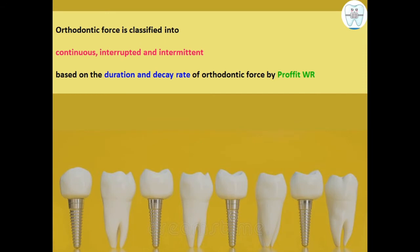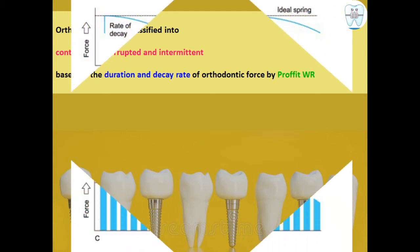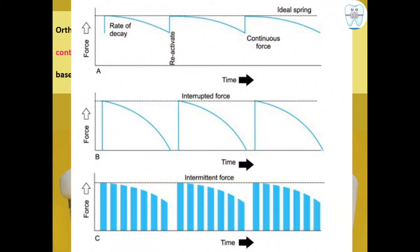Optimum or ideal orthodontic force is classified into continuous, interrupted, and intermittent by Proffit, based on the duration and decay rate of these forces. This can be shown on a graph plotted against force and time, illustrating how these three types differ.